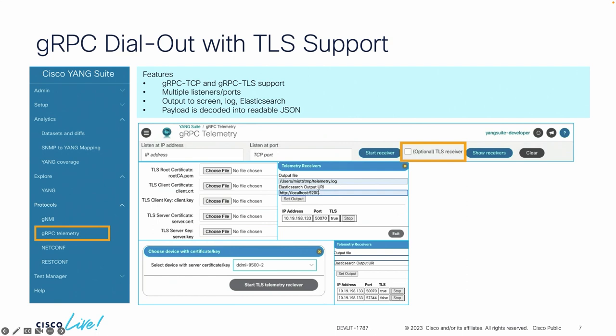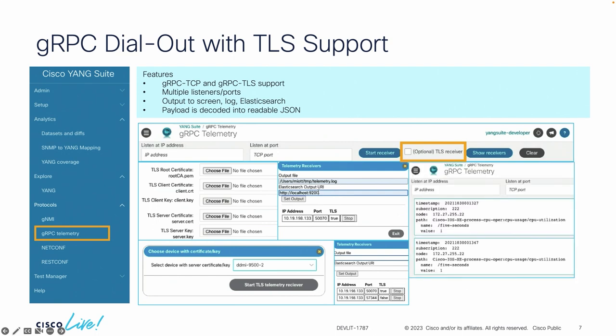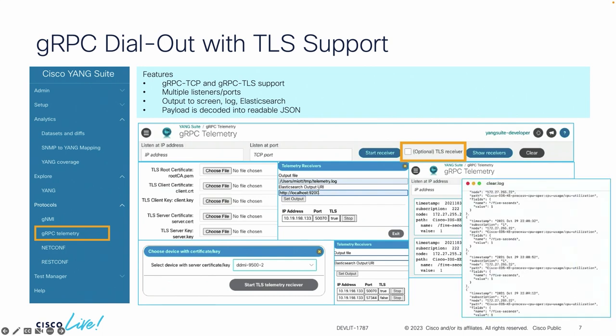Once everything is set up, we can start to see the data coming in. In this use case, we're actually using CPU data every five seconds, so we're getting regular updates. We also have the option to view all of the streaming data in different formats — for example, we can look at the JSON logs. This is really important for use cases where you want to take that telemetry data and do something with it, such as feeding a machine learning model, since it's already in JSON format.